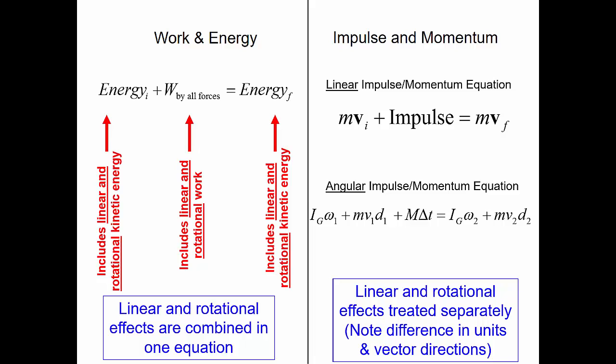Note the difference in units and vector directions. All terms in the linear impulse and momentum equation have units of kilograms meters per second. But all terms in the angular impulse and momentum equation have units of kilograms meters squared per second. So we cannot combine these two equations — we must treat linear and angular impulse and momentum separately.